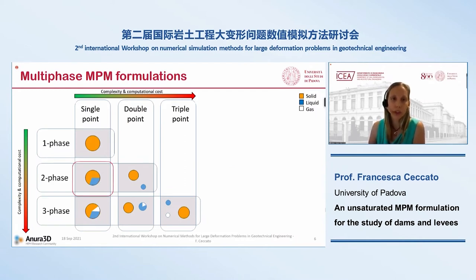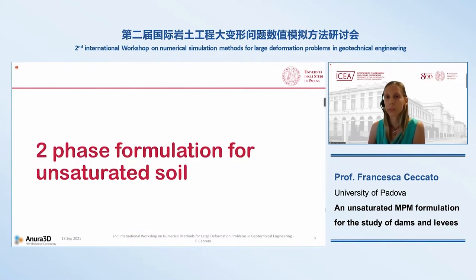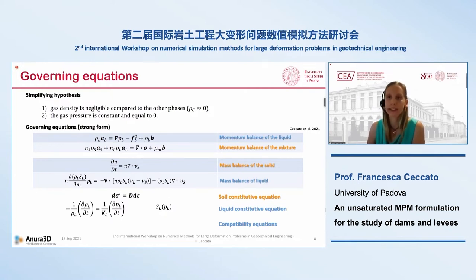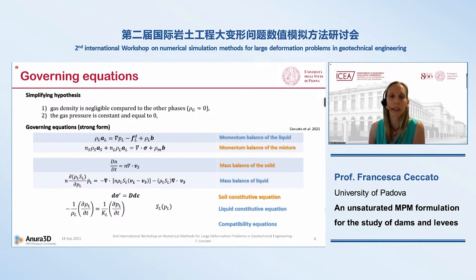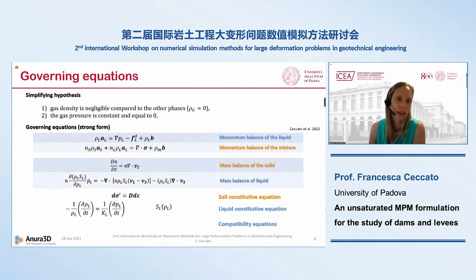To simulate unsaturated soil with a two-phase formulation, we introduce simplifying assumptions. First, the gas density is negligible compared to other phases and the gas pressure is constant and equal to zero, so we discard the momentum and mass balance of the gas. The governing equations are the momentum balance of the liquid and the momentum balance of the mixture, discretized with the Galerkin method and solved at the mesh nodes. The mass balance of the solid, the mass balance of the liquid, the constitutive equations of solid and liquid, and the compatibility equation are solved at the material point level.